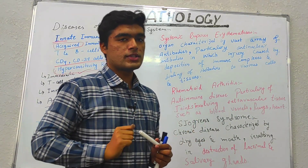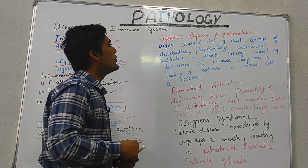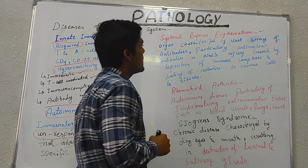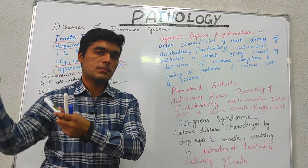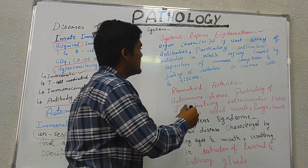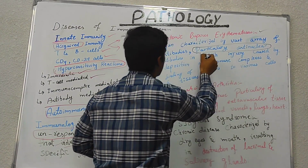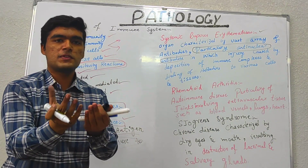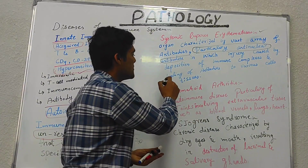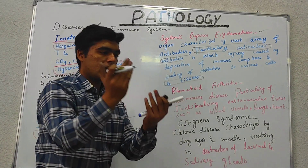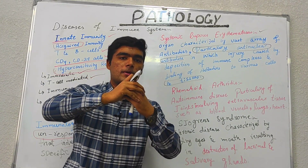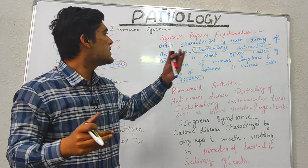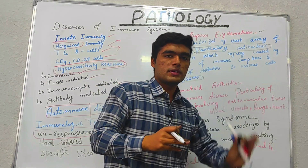We have systemic lupus erythematosus (SLE), which is characterized by a vast array of antibodies, particularly anti-nuclear antibodies. The injury is caused by the deposition of various antibodies in particular tissues. These antibodies deposit in the tissue, leading to the development of lupus — systemic lupus erythematosus.